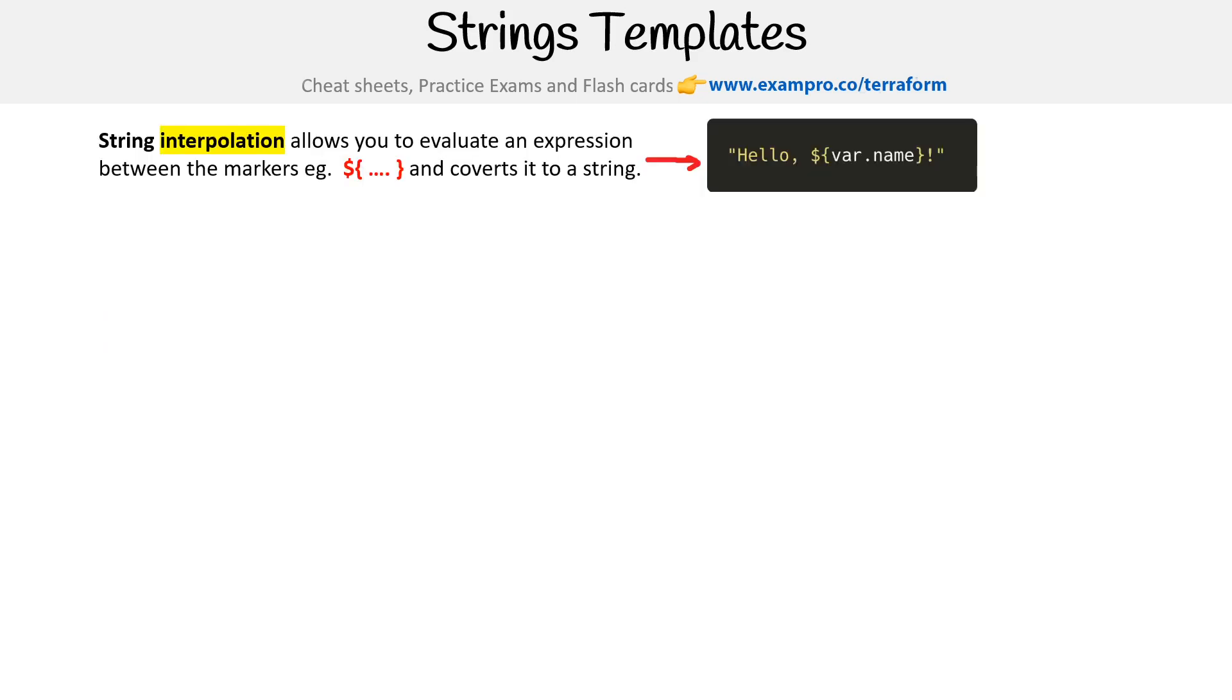Okay, let's take a look at string templates, because this is the real power of strings. So the first is string interpolation. And this allows you to evaluate an expression between the markers. So the idea is instead of having to do double quotations and do plus signs to stitch together strings, what you do is just do a dollar sign, curly braces, and then put the expression or variable that you want to be converted.